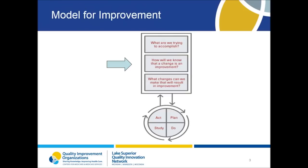The Institute for Healthcare Improvement uses the Model for Improvement as the framework to guide improvement work. The Model for Improvement is a simple yet powerful framework for any initiative. The first step is to pick a focus area and then answer the first question: what are we trying to accomplish? This is where you define the problem and set the goal. Once you have defined what you are trying to accomplish, it is time to think about how you will know whether or not the changes you will make is an improvement. Remember that you can make many changes without improving anything. This is where measurement helps you.